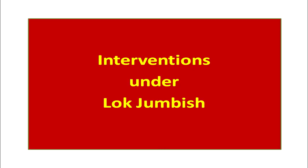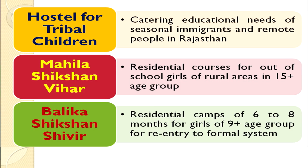The major interventions under Lok Jumbesh project in Rajasthan: The first was hostels for tribal children. Hostels were constructed and established, catering to the educational needs of seasonal immigrants and remote people in Rajasthan. For tribal children who shift from place to place based on different seasons, hostels were established so that children from these communities and seasonal immigrants could stay at one place and receive education.